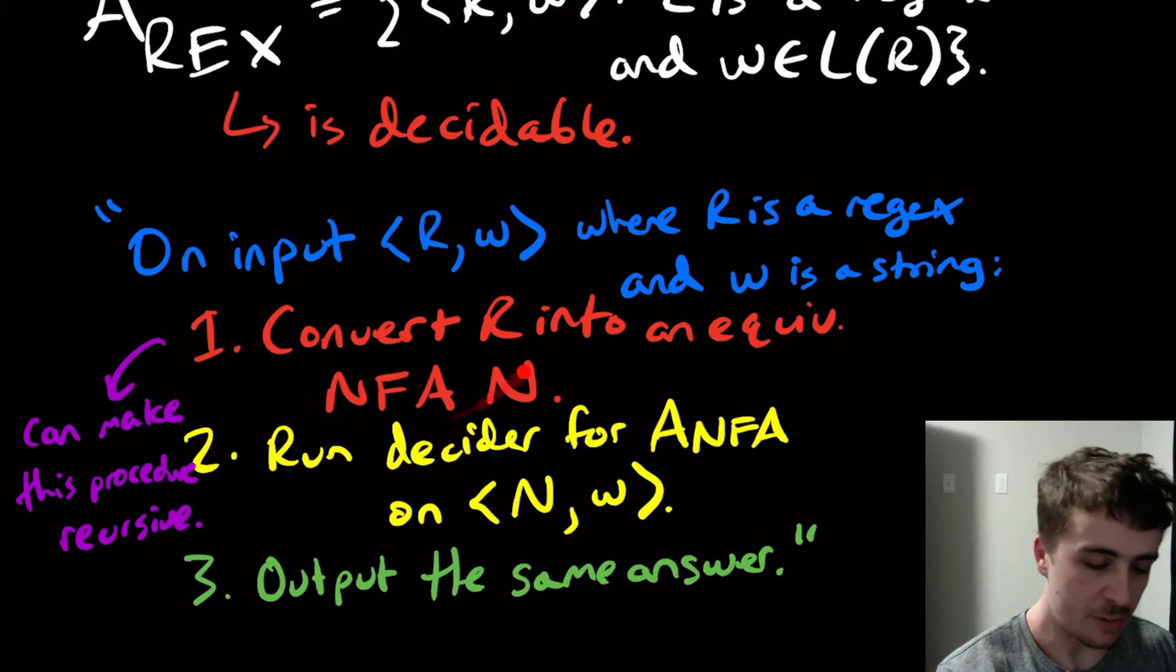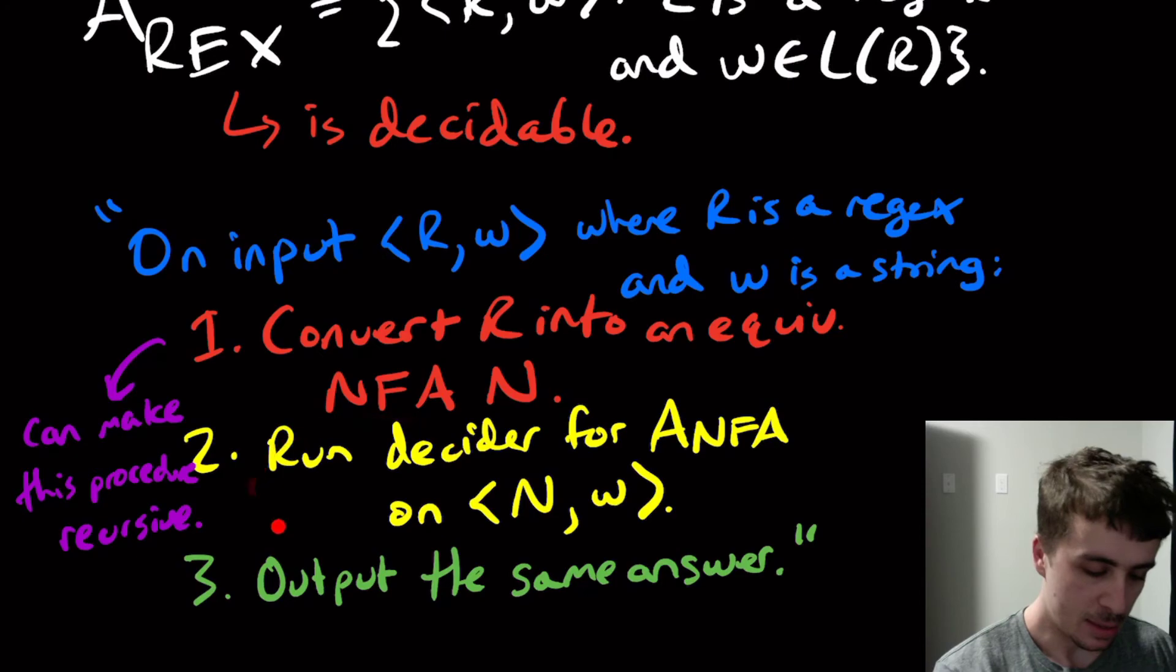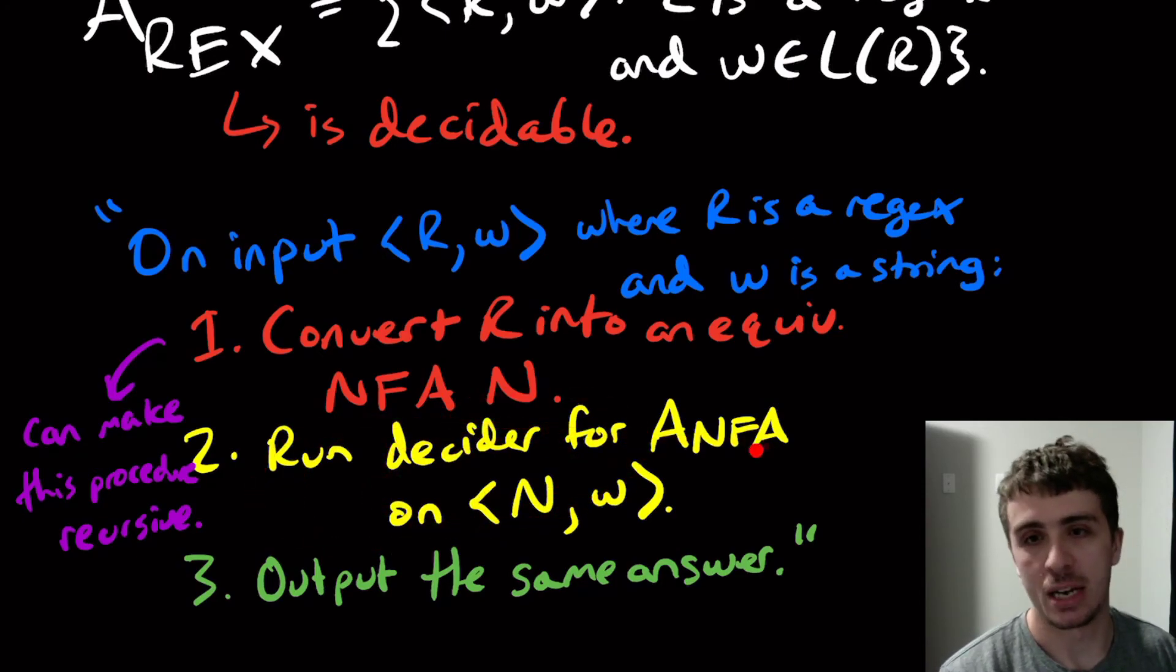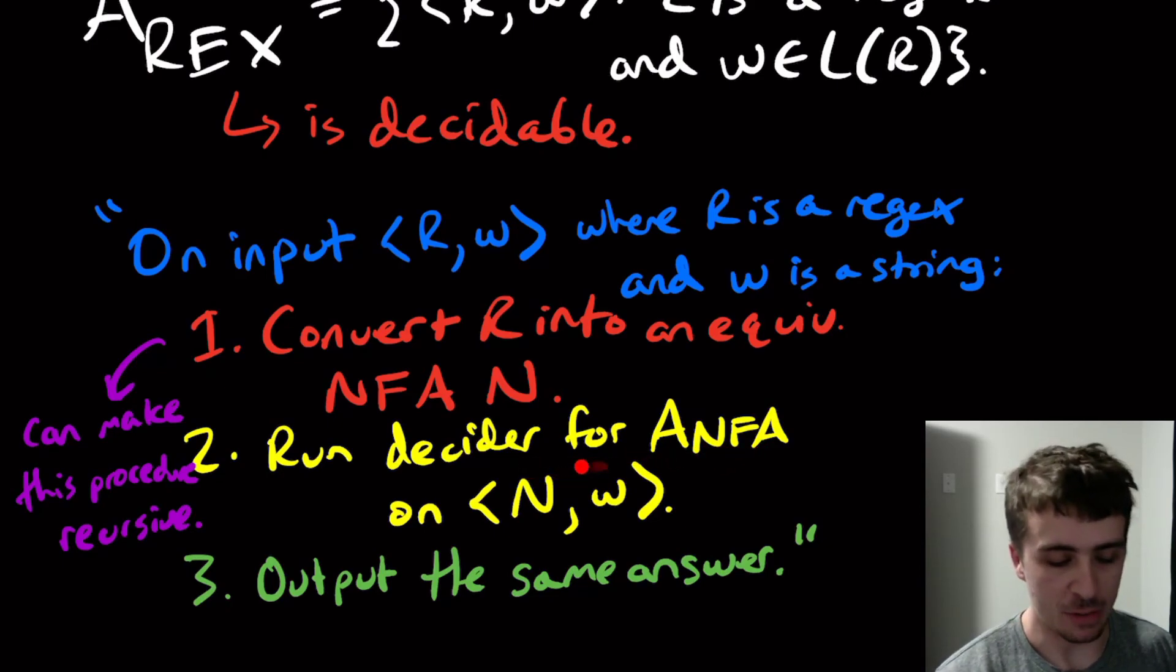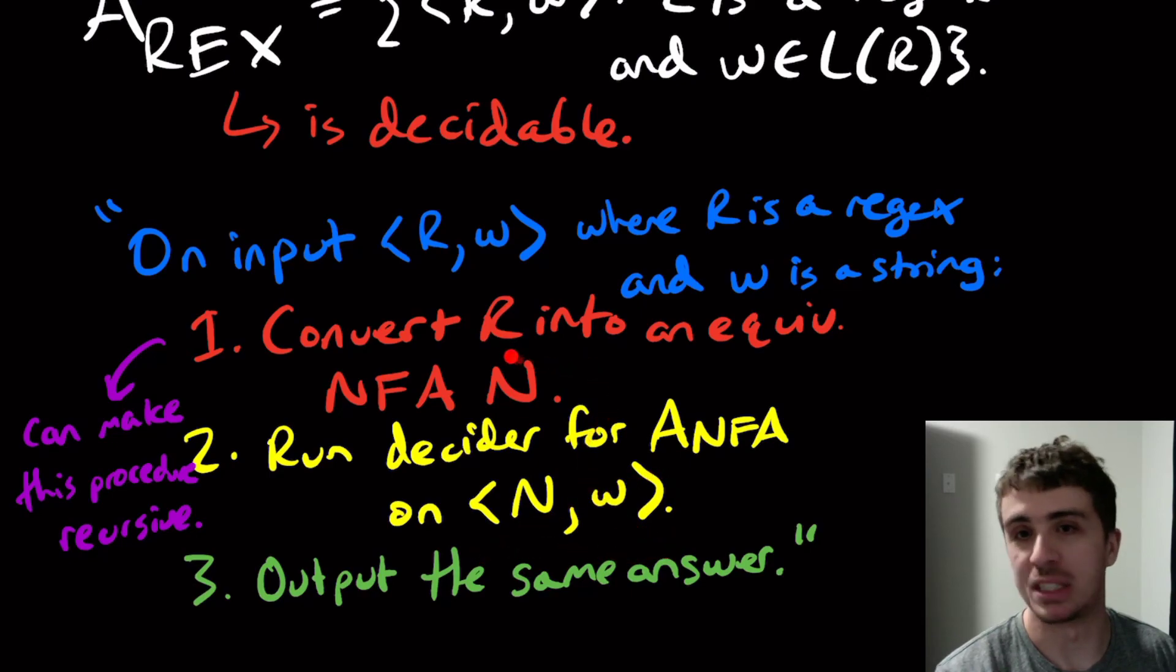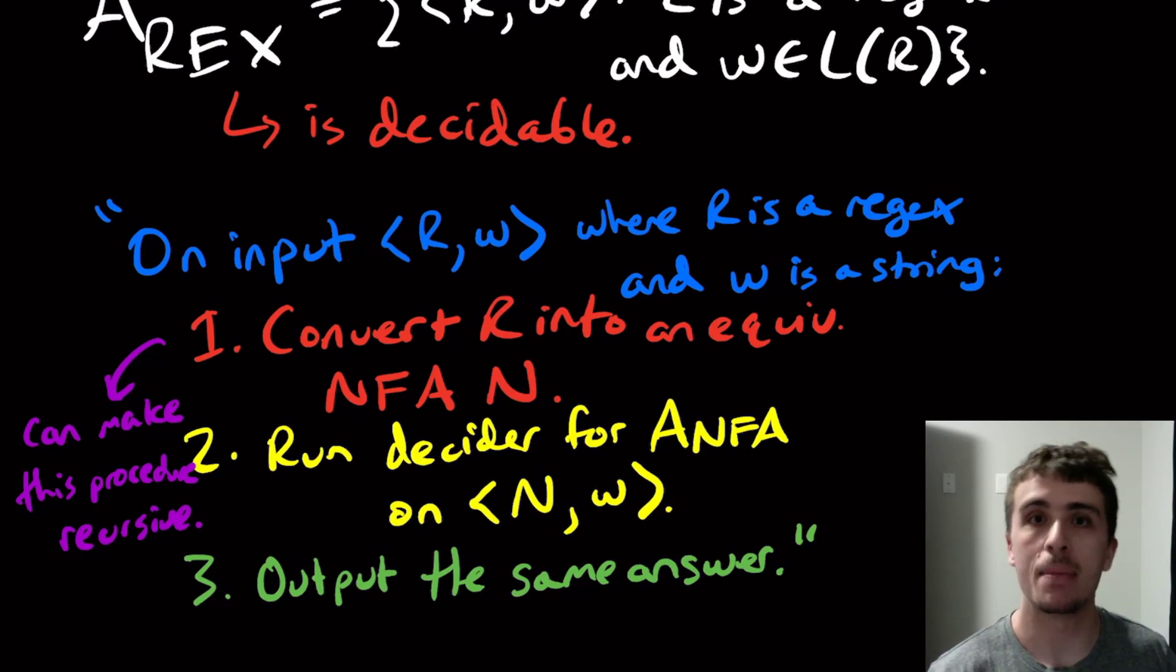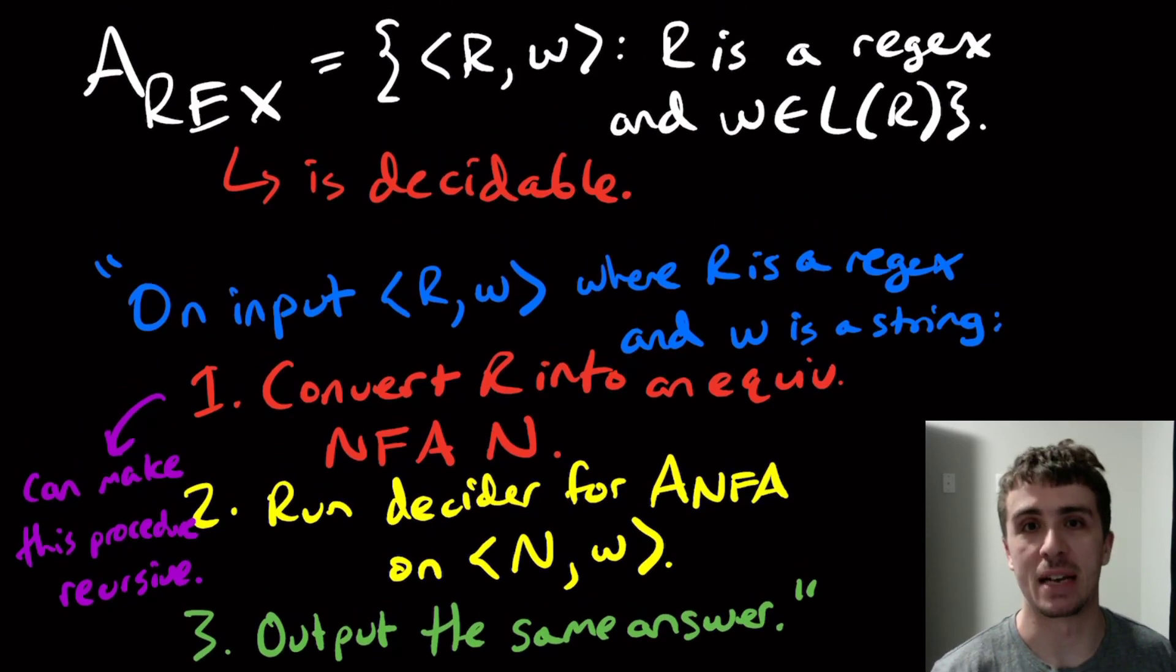So this runs in a finite amount of time because the regex is of finite size. The second step runs in a finite amount of time because we showed that the machine we built for a sub nfa runs in a finite amount of time. It reports the right answer because the answer of whether this nfa accepts w is the same as whether this regex can generate w. And so therefore this is correct. And all three steps run in a finite amount of time. And so therefore a sub rex is in fact decidable.